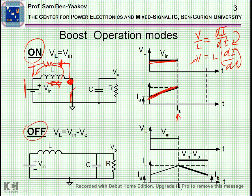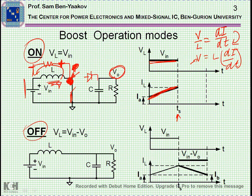...the voltage will start going up very quickly, becoming more and more positive. Until it will be higher — the voltage here — than V out. Remember, we have here a diode. And that's actually the purpose of the diode. Once the voltage here is higher than V out, the diode will start conducting.